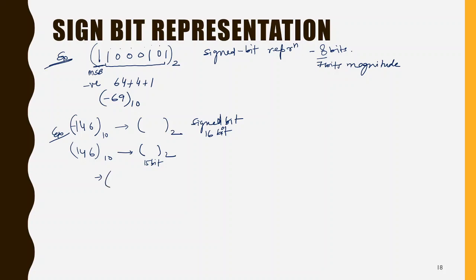You can directly convert to binary using a shortcut depending on the number of marks for the question. We need 128, which is 2 raised to power 7, so the 8th bit will be 1. Do we require 64? No — so 2 raised to power 6 is 0. Do we require 32? No — 2 raised to power 5 is 0. Do we require 16? Yes — 128+16=144.